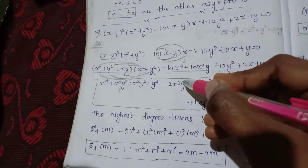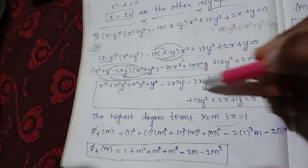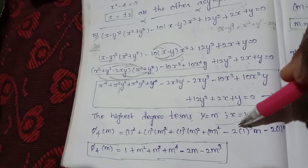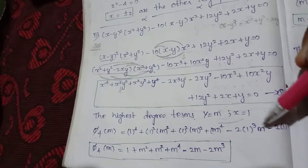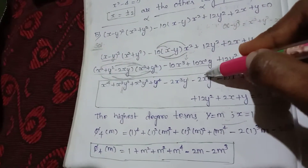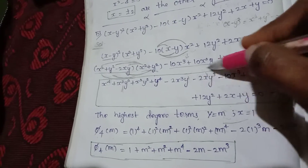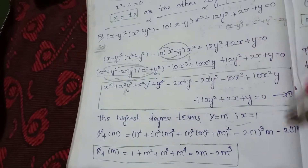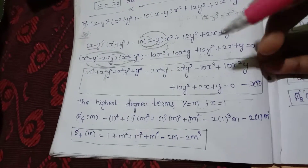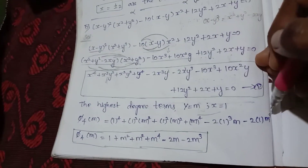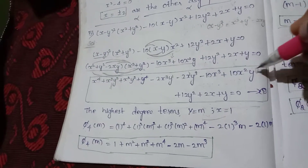Here we have x cubed, so this is 1 cubed. Minus 2 times x equal to 1 cubed, y equal to m, so this is minus 2m. Then minus here: x equal to 1 squared, y equal to m cubed, so this gives minus 2m³.